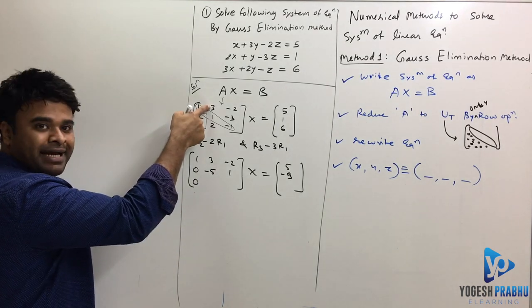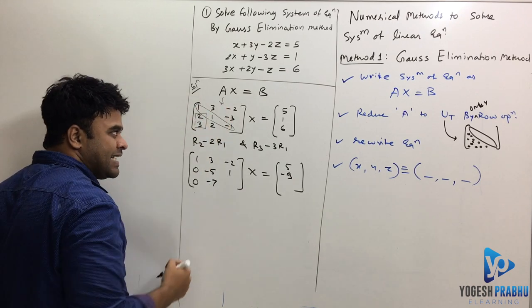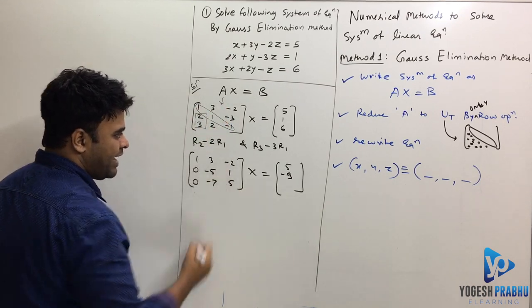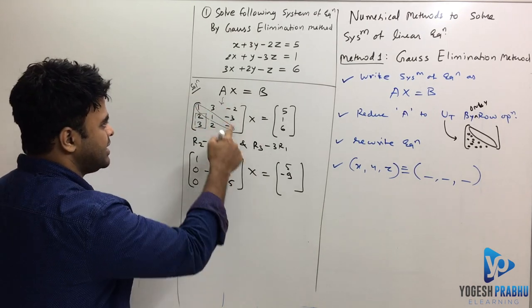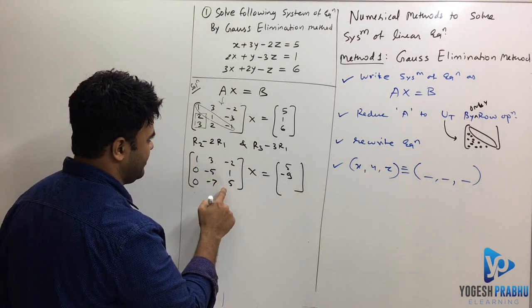Multiply by minus 3, minus 9, add here, minus 7. Multiply by minus 3, that's 6 and minus 1 is 5. Is that correct? Minus 3 into minus 2 is going to be 6, 6 and minus 1 is going to be 5. That's correct.